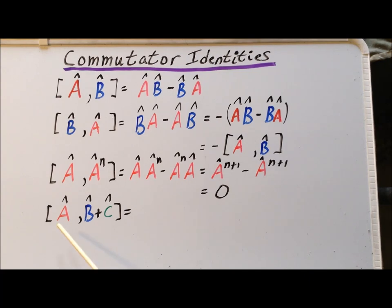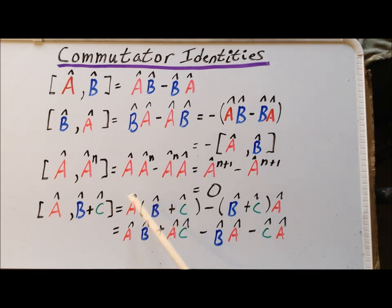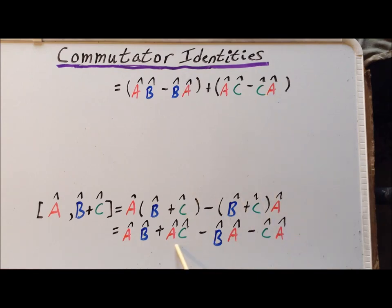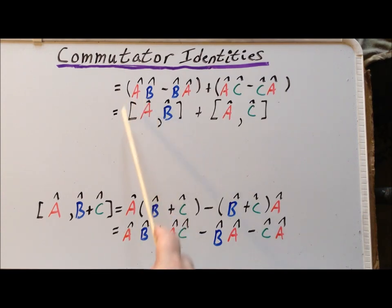Next, we look at the commutator of A with B plus C, involving three operators. Using the definition, this equals A times (B plus C) minus (B plus C) times A. Applying the distributive law gives AB plus AC minus BA minus CA. Collecting the first and third terms gives AB minus BA, and the second and fourth gives AC minus CA. We recognize these as commutators, giving the result: [A, B+C] = [A,B] + [A,C].